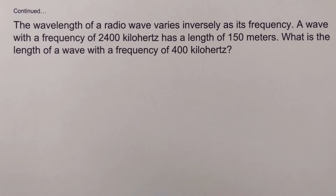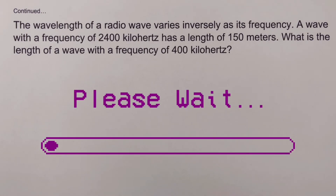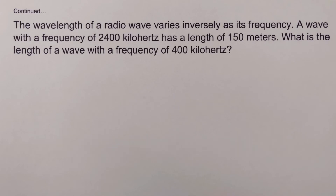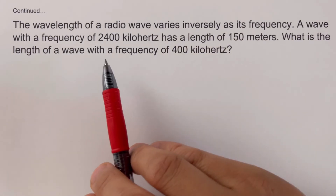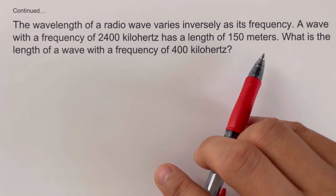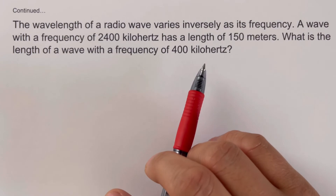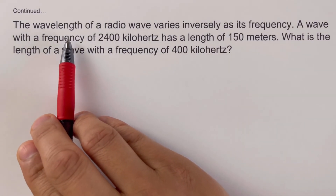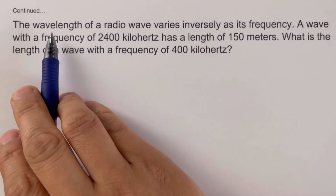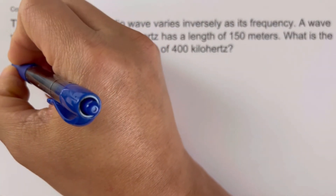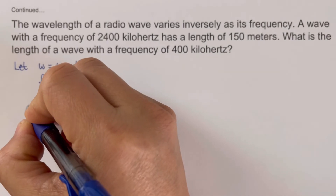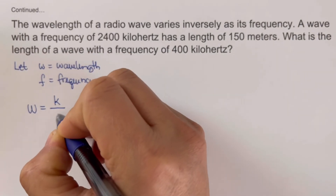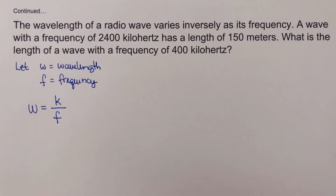Now let's move on to the next example. I encourage you to pause this video and try this problem on your own, then unpause to check your answer. The wavelength of a radio wave varies inversely as its frequency. A wave with a frequency of 2400 kilohertz has a length of 150 meters. What is the length of a wave with a frequency of 400 kilohertz? We assign w for wavelength and f for frequency. Since wavelength varies inversely as frequency, we write w equals k over f.